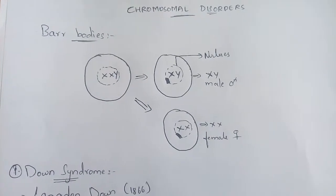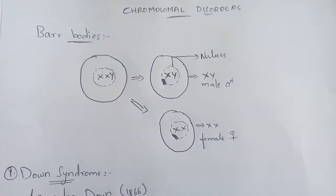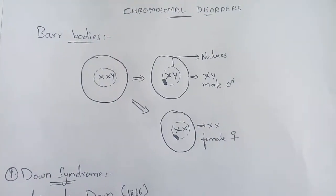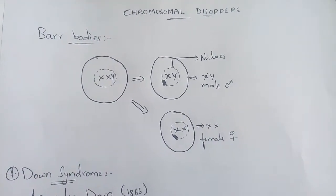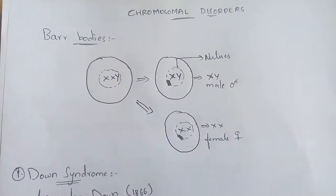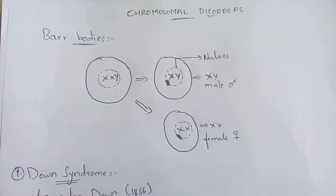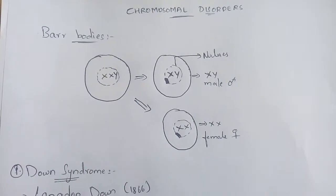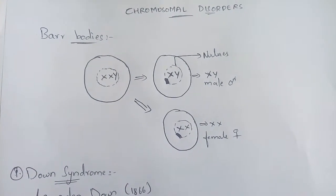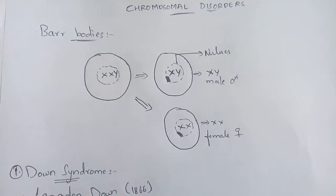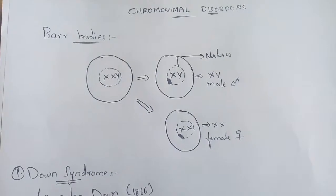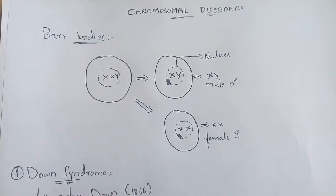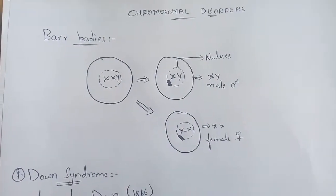Hello friends, my name is Vanindra. Today I am going to discuss a topic about chromosomal disorders. Chromosomal disorders mainly includes three types of syndromes: Down syndrome, Turner syndrome, and Klinefelter syndrome.